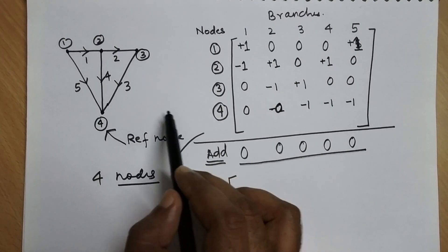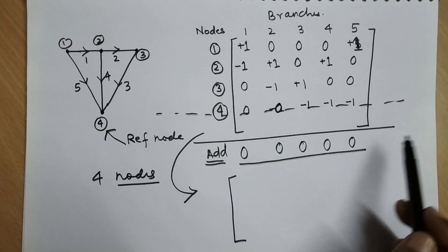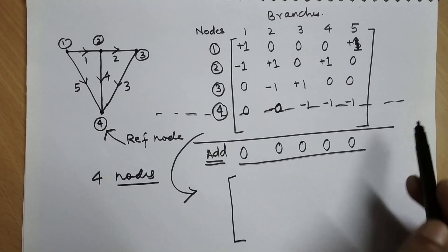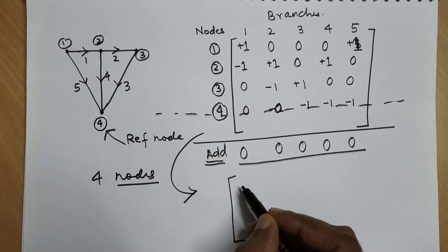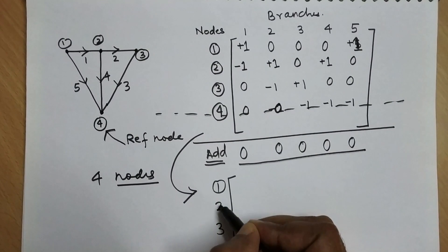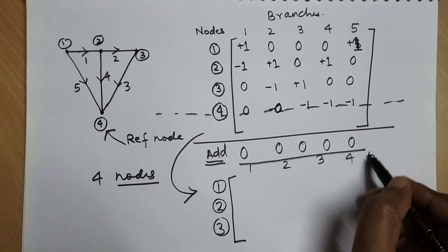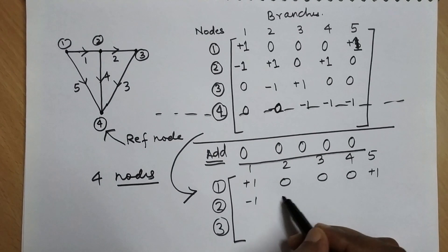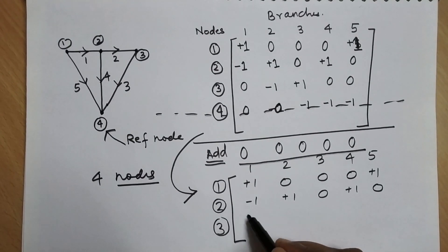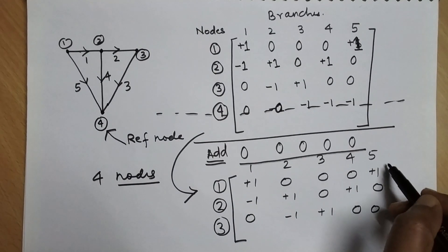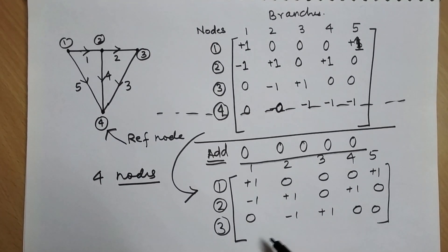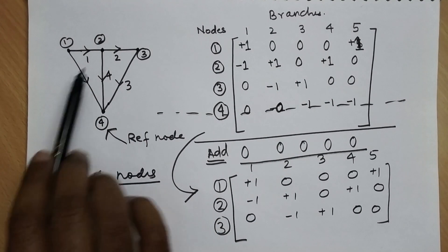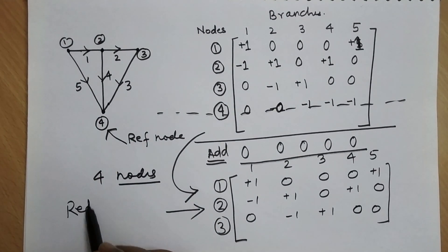If we consider node four as the reference node, the incidence matrix will be reduced. To reduce it, we simply delete row four, since row four corresponds to the reference node. The remaining matrix has rows for nodes one, two, and three, and columns for branches one through five. Note that the sum of the columns will no longer be zero in this reduced matrix, because we have not considered all the nodes. This type of matrix is called the reduced incidence matrix.